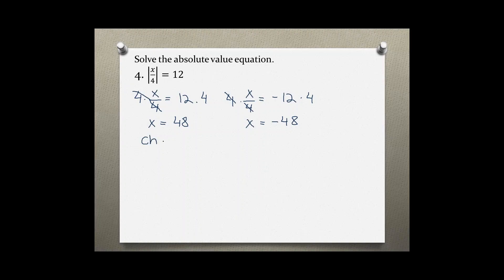We always have to check our solutions because sometimes one or both solutions may not work out. So plugging our solution into the original problem, we have 48 divided by 4 inside the absolute value bars equals 12. And plugging the second solution back in, we get negative 48 over 4 inside the absolute value bars equals 12.